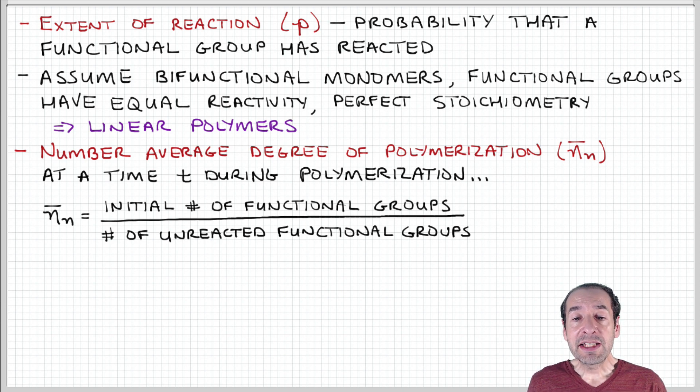With this in mind, we can define a number average degree of polymerization at some time t by counting the initial number of functional groups present in the sample divided by the number of unreacted functional groups that are still remaining at time t. Notice that if we're counting functional groups, we're actually counting molecules.